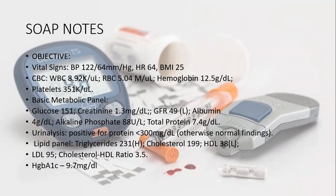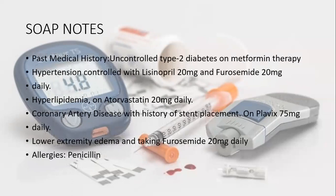The total blood count shows WBCs of 8.92, RBCs of 5.04, hemoglobin 12.5, and platelets 351. The glucose, creatinine, and albumin values are showing signs of kidney failure. Urine analysis is positive for protein, which clearly indicates the patient has chronic kidney disease. LDL is also elevated, cholesterol HDL is 3.5, and hemoglobin A1c is 9.7, which is very high — it should be below 6.5.